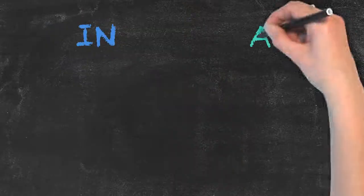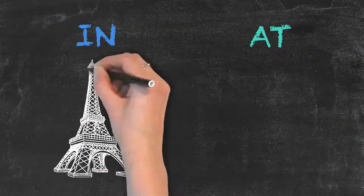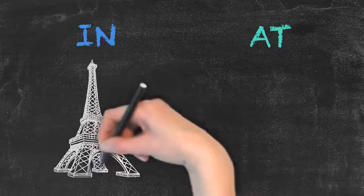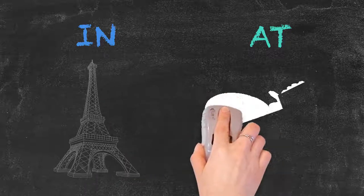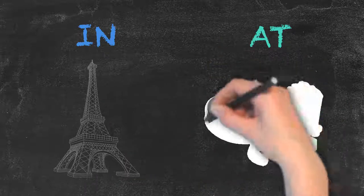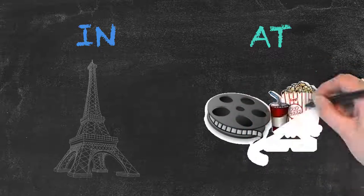So remember, use in when speaking about the position of someone or something inside large places, and at for the position of someone or something inside small and unimportant places as well as proper names. That's it for today. See you next time.